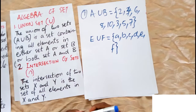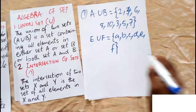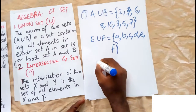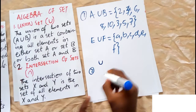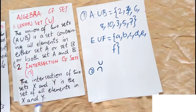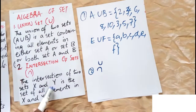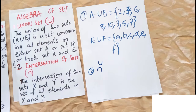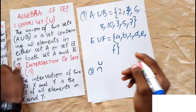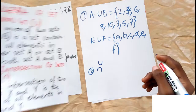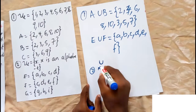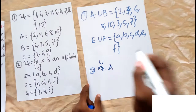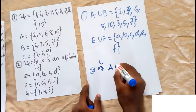The intersection symbol is written as ∩. Note that the intersection of two sets X and Y is the set of all elements in both X and Y. For our example, let's use A intersects C.